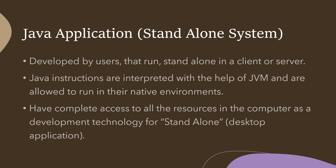Java instructions are interpreted with the help of the JVM (Java Virtual Machine), as discussed in the previous video, so the program can run on any platform — web browser, Windows, or Linux. With JVM interpretation, Java applications have complete access to all resources in the computer as a standalone development technology. Whatever you do is available only in that computer, which is why it is called standalone — all resources available in the computer can be used.